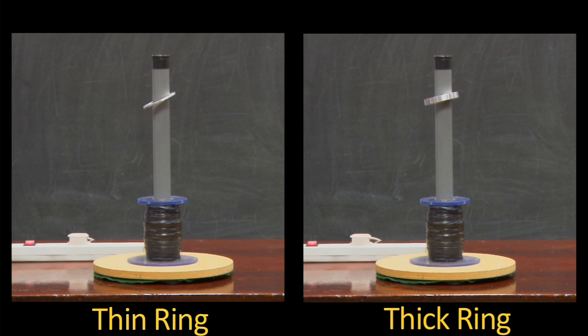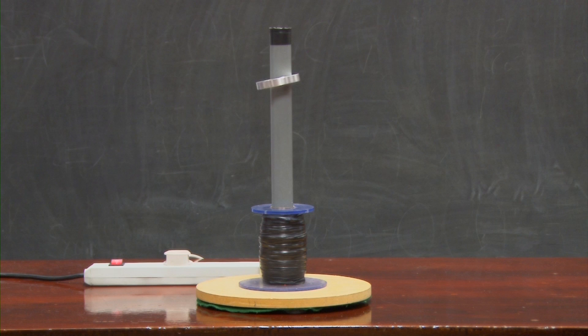The explanation of the jumping and levitating rings presented here is useful as an illustration and reminder of Faraday's law and Lenz's law. It should also remind you of a couple of key facts about resistance and about magnetic fields due to current carrying coils.